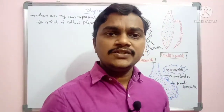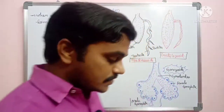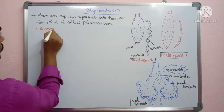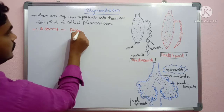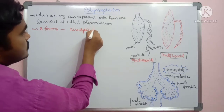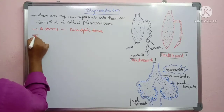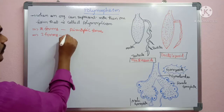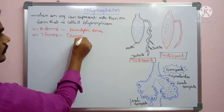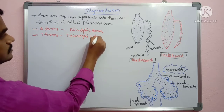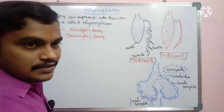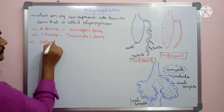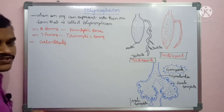If any organism exists in two forms, that is called dimorphism — a dimorphic condition. If it is in three forms, that is called a trimorphic condition. In the case of more than three forms, that is called a polymorphic condition. This is commonly seen in cnidarians.